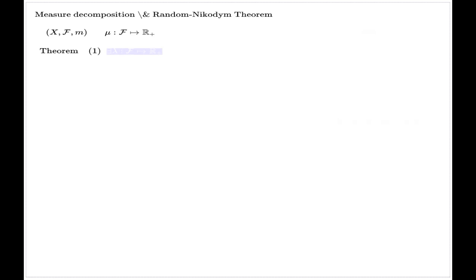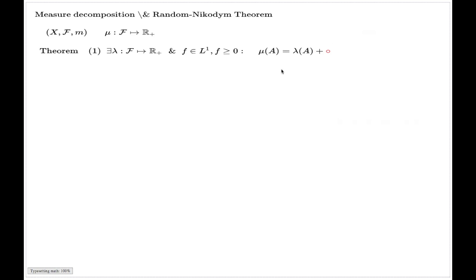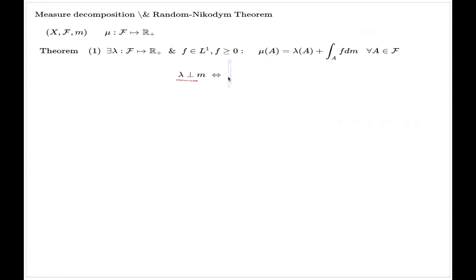Now the theorem I want to discuss with you — it has two parts. The first one says that there is another measure on the same measure space and there is a summable non-negative function f such that the original measure mu admits a representation for any measurable subset, plus a first component, measure lambda, which is disjoint from the original measure m. This symbol and this term 'disjoint' is explained like this: if you have a subset where m is strictly positive, then for such a subset lambda will be zero, and the other way around — if you have a subset such that lambda is positive, then m will be zero.